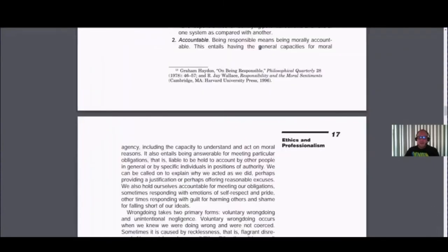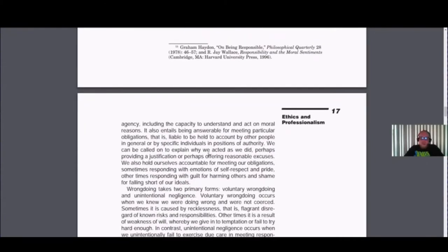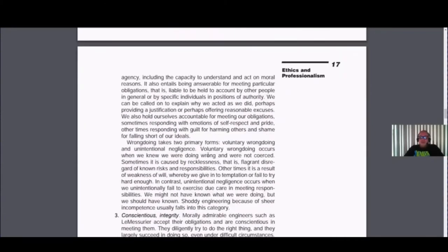Accountability involves both the capacity for explanation and the actual activity of explanation — explicability when it comes to it. Often if nothing goes wrong, there's nothing to explain. When we're talking about explanations, we're talking about our narratives, our accounts. Accountability is the ability to offer an explanation, offer an account of what happened.